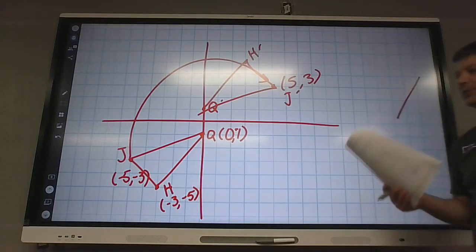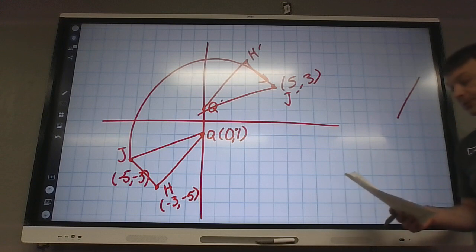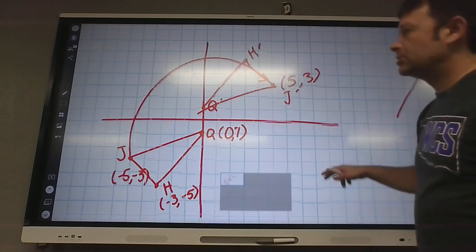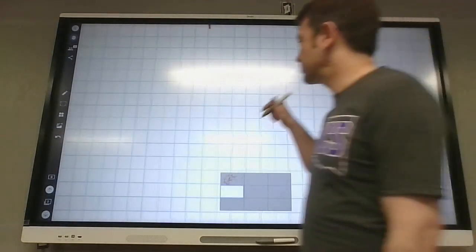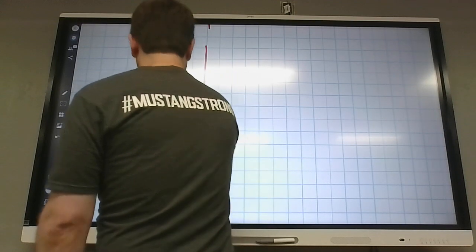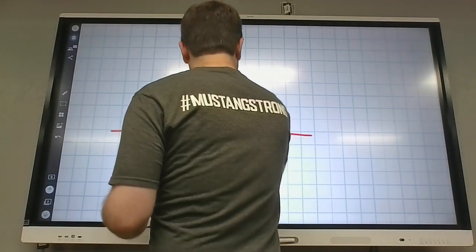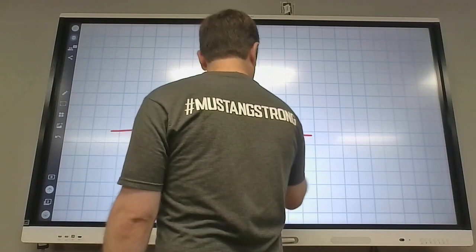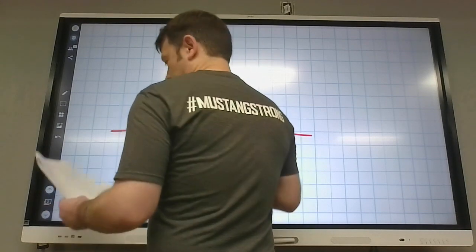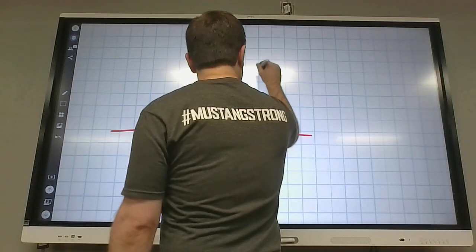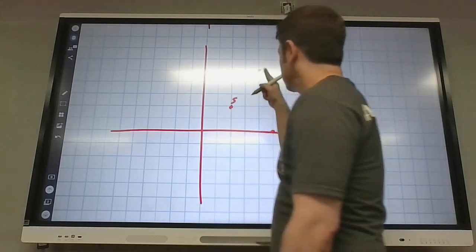All right. Yeah. So we're rotating about the origin around 0, 0. Number two, we're supposed to rotate counterclockwise. So let me draw in. S is at 2, 2. L is at 5, 0. B is at 4, 5. Okay.